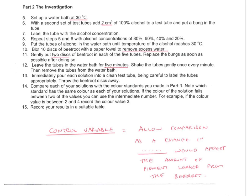For part two, what we've got is a series of known alcohol concentrations. We're putting the beetroot in them, and we're measuring the amount of pigment that comes out — and we can measure the amount of pigment that's come out, either qualitatively or quantitatively.